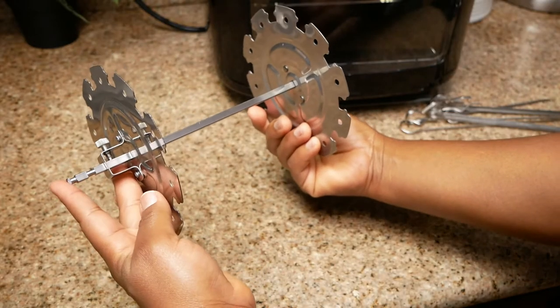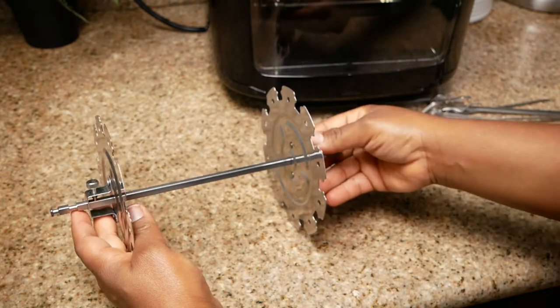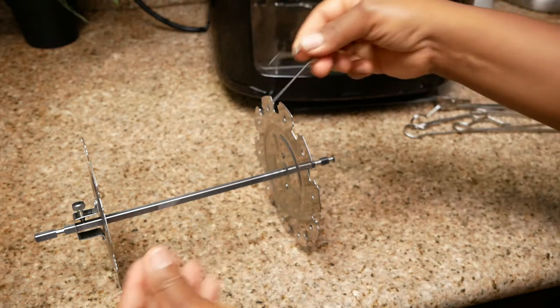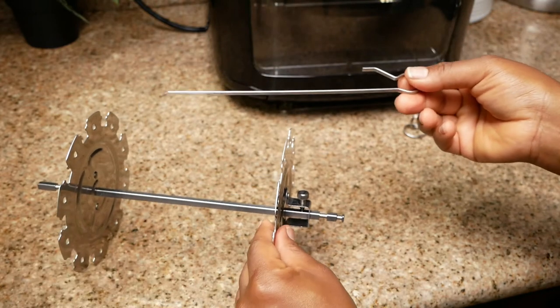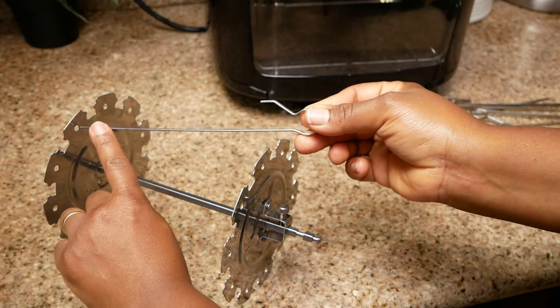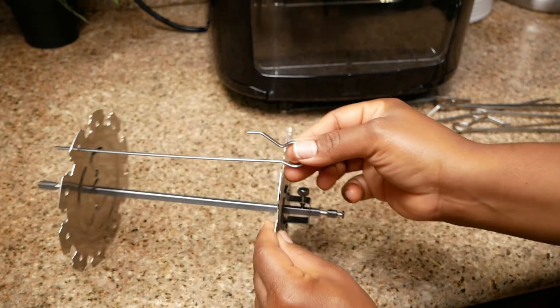The final step is now to insert your skewers into the skewer rack. And of course, if you are making kebabs, sausages, hot dogs, or anything like that, you want to go ahead and put your food onto the skewer before this step. Just do like you see here—you want to insert the sharp end of the skewer through the hole that's on the skewer rack.